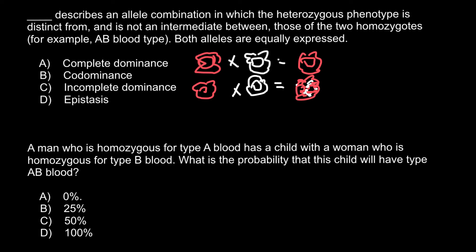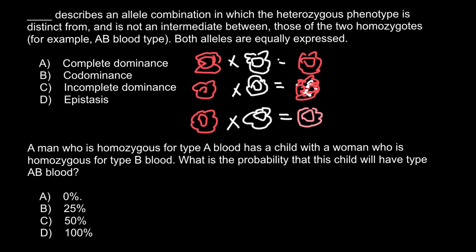With incomplete dominance, when we cross a plant with red flowers with another plant with white flowers, the resulting progeny would all have flowers of an intermediate color between the two parents. So between red and white, this would be pink. And if the colors were blue and white, we would also have an intermediate color, something like pale blue.